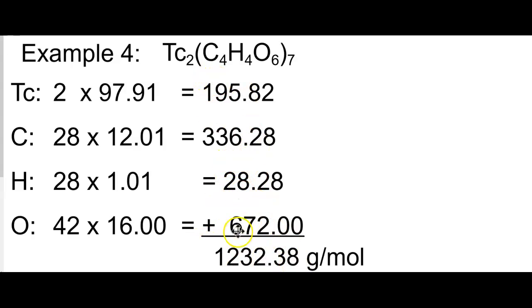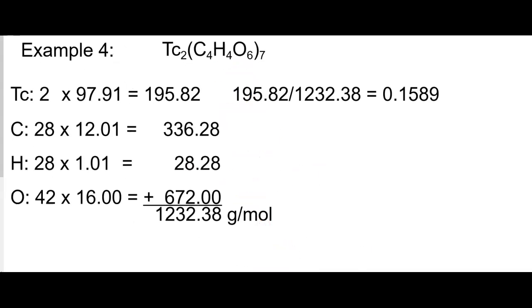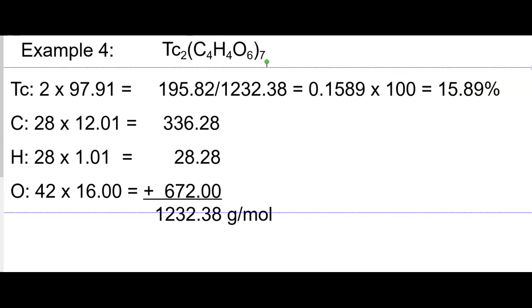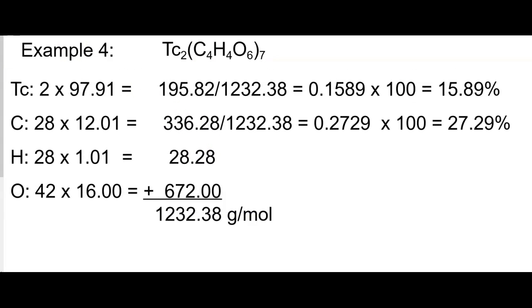We're going to take each of the parts and divide by the whole. So here we have that divided by that. We get this times 100 gives us our percent. Carbon part over whole times 100 gives us our percent.